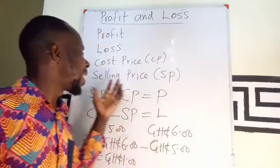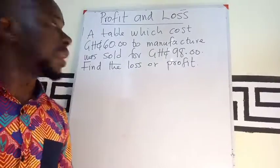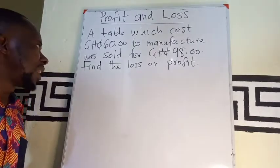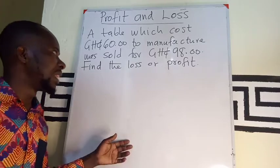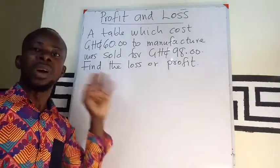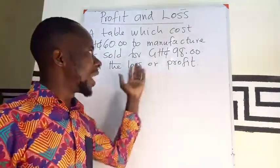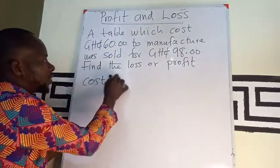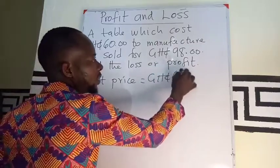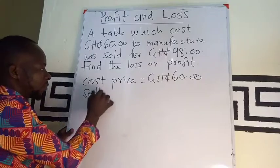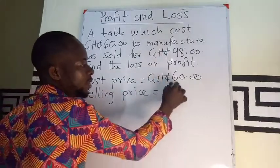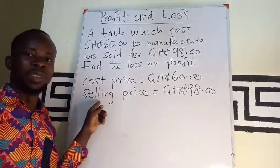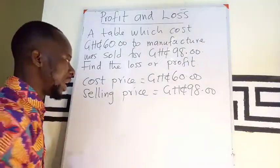Let's take a question and apply this. A table costs 60 Ghana cedis to manufacture and was sold for 98 Ghana cedis — find the profit or loss. From the beginning we said that if the selling price is bigger than the cost price, then there is a profit. So we can say the cost price is 60 Ghana cedis and the selling price is 98 Ghana cedis. Since the selling price is bigger than the cost price, we are having a profit.